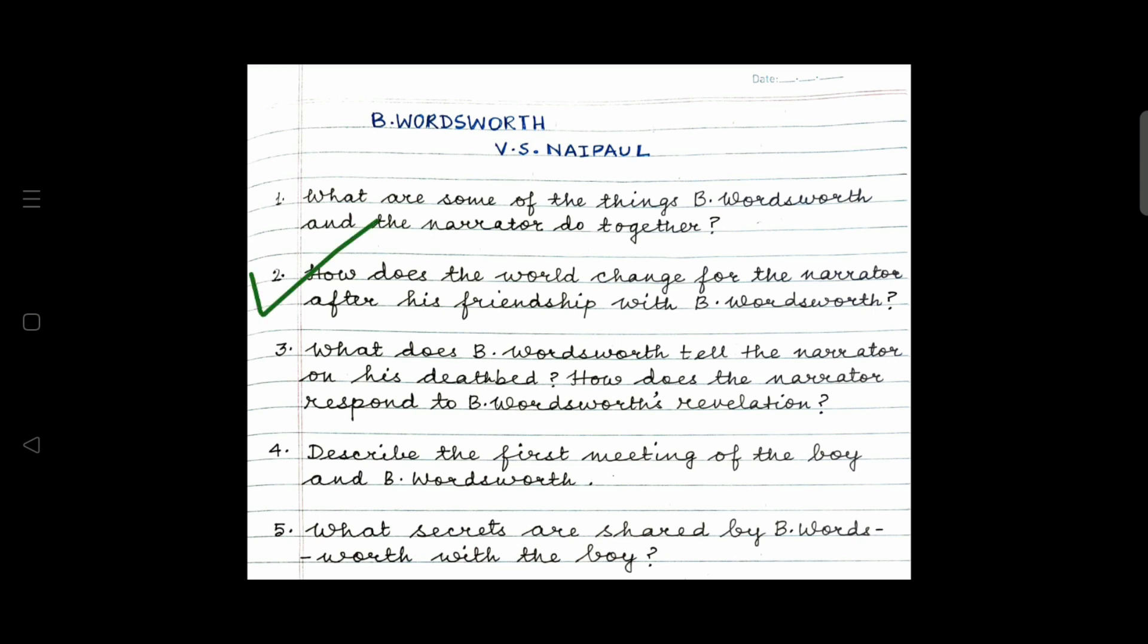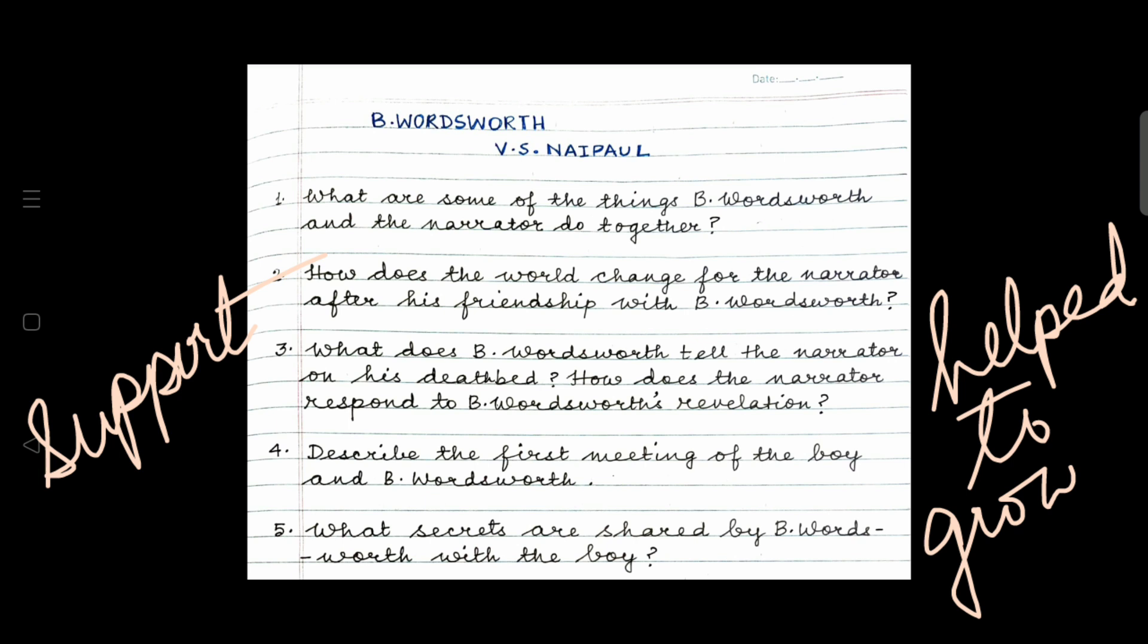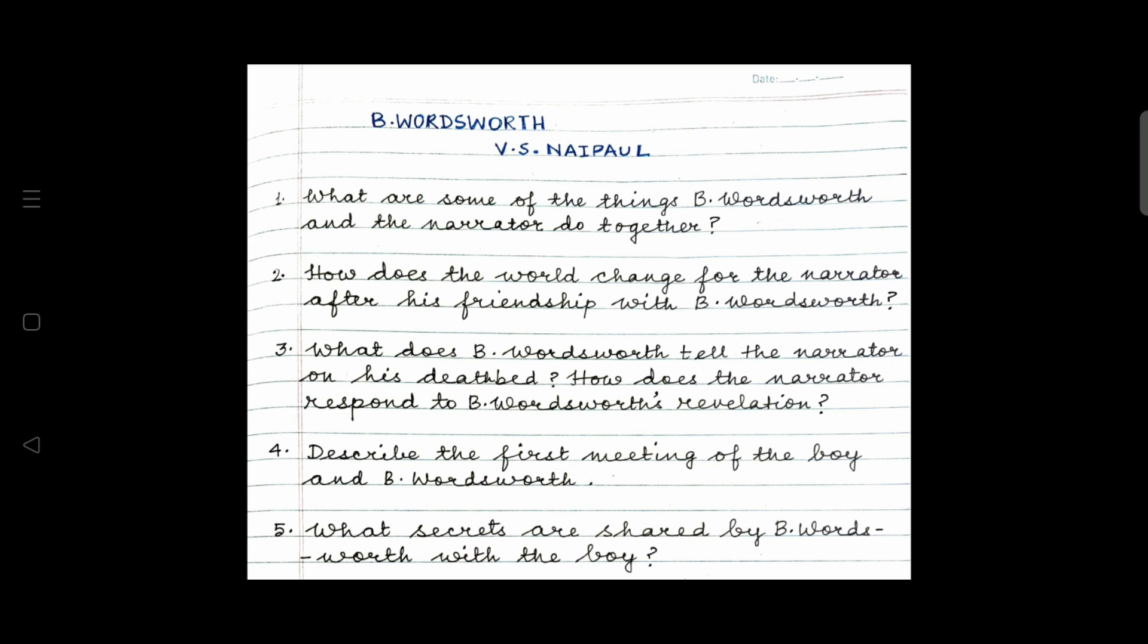B. Wordsworth and he became friends and the narrator often went to B. Wordsworth's house and sat talking to him. They went for long walks together, went to the botanical gardens, the rock gardens, climbed Chancellor Hill in the late afternoon, watched Port of Spain get engulfed in darkness while the city and the ships in the harbour got lit up. You will elaborate on these points. Read the text and I'm sure you will be able to write this answer very easily. Remember, there is no word limit. Time management is a factor and the full marks is four.